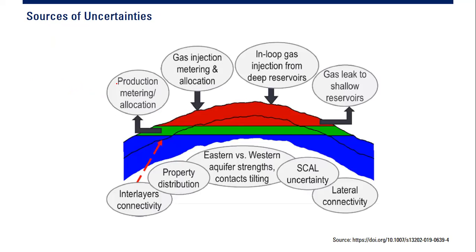For this case, the source of uncertainty in the gas zone includes uncertainty in gas injection metering and allocation, uncertainty from in-loop gas injection from the deep reservoir and from the oil production zone, error in production metering and allocation, and also from the gas cap there can be gas leak to the shallow reservoir — which we cannot calculate or measure, so we have uncertainty regarding gas leaking.